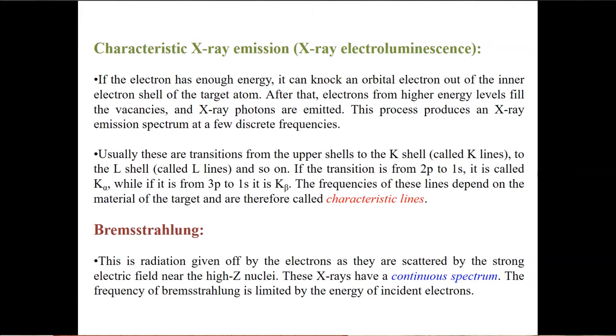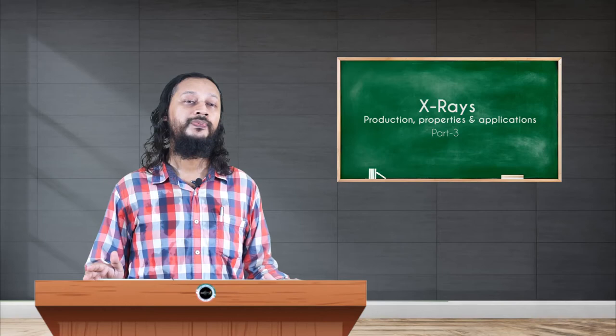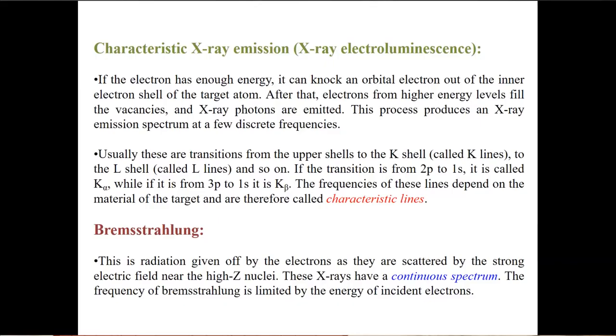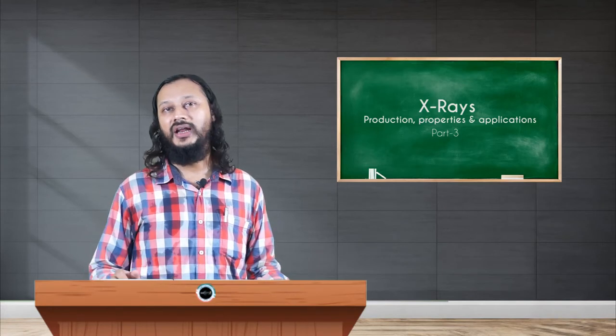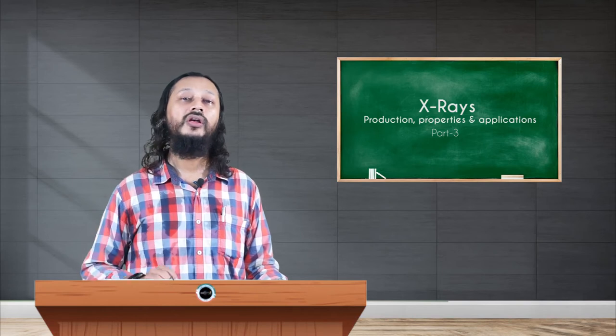Basically the radiation given off by the electrons as they are scattered by a very high electric field near a very high atomic number nucleus. This X-ray is continuous in nature unlike the previous one which is characteristic line emission. This is a continuous X-ray spectrum and the frequency is limited to the energy of the incident electrons.